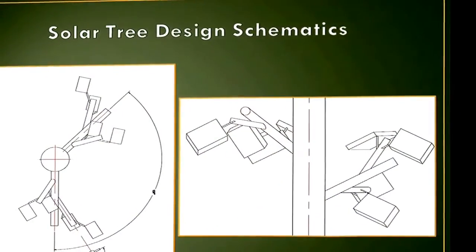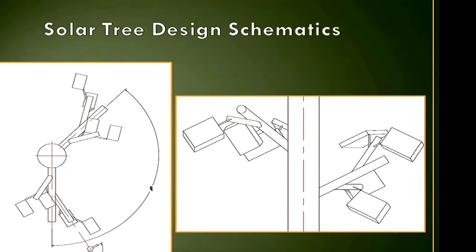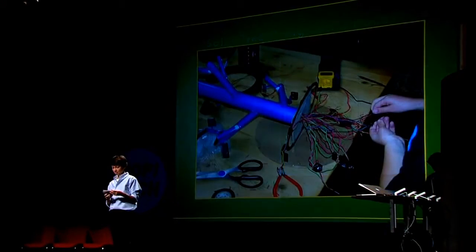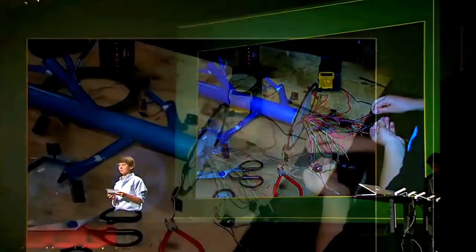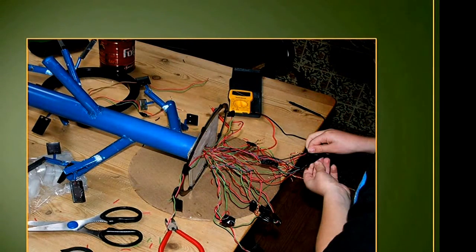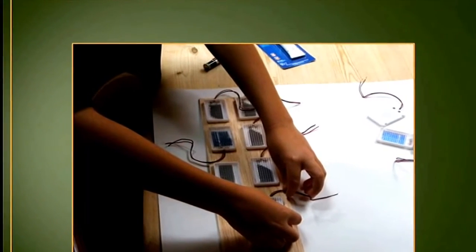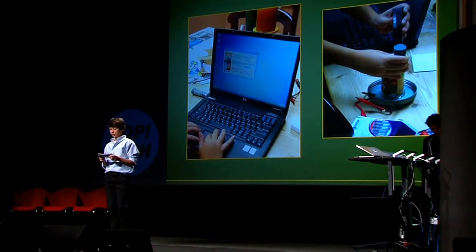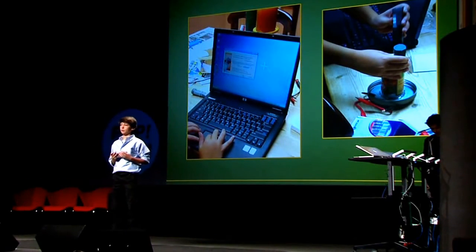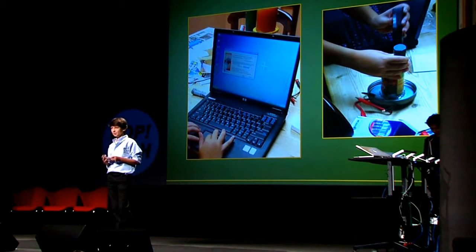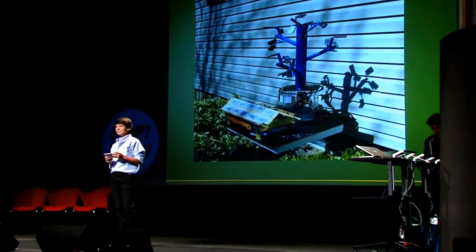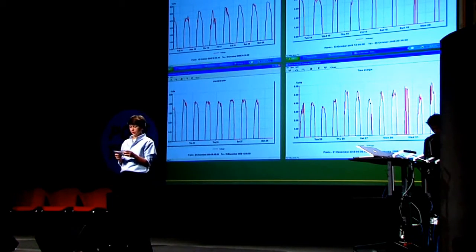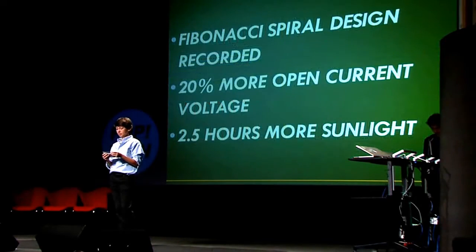I had the hypothesis that since the main job of leaves is to process sunlight for photosynthesis, the spiral pattern had something to do with gathering sunlight. To answer this question, I designed and built my own solar panel test models following the Fibonacci pattern of an oak tree, copying the pattern as closely as possible. I also constructed a flat panel array for comparison, and used data loggers and a computer to record voltage and current. The results were really surprising: the Fibonacci design recorded 20% more open current voltage and collected up to 2.5 more hours of sunlight during the day than the flat panel design.